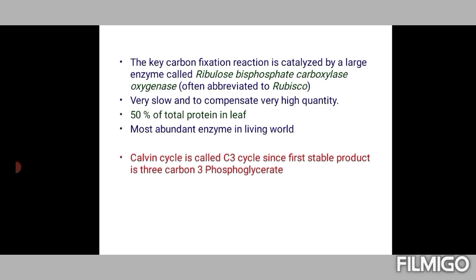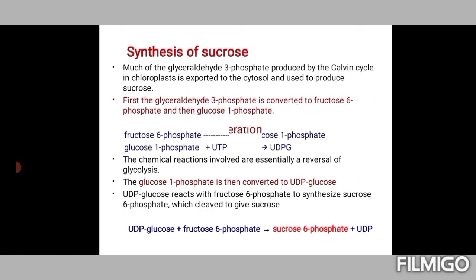As discussed, 50% of the protein in a leaf is constituted by RuBisCO, which is why it is the most abundant enzyme in the living world.